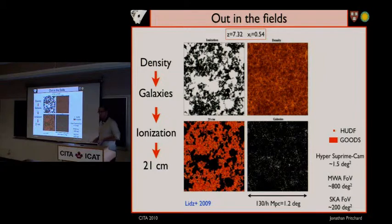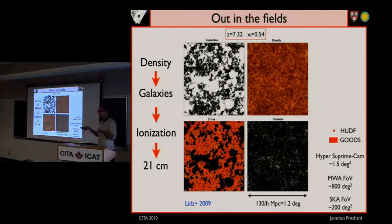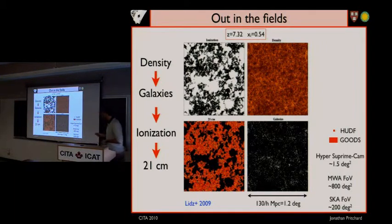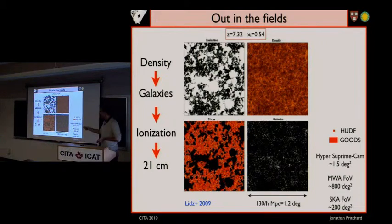Reionization is quite a complicated process. We have this theoretical picture that density fluctuations created after inflation grow over time. Galaxies form at the dense peaks of the density distribution. As those galaxies produce photons, they ionize regions creating large bubbles. We're hampered by the fact that the field of view of telescopes like Hubble is very small compared to the expected sizes of the ionized bubbles. So we need other observations — things like the 21-centimeter line — that give us a big-picture view to put together with the galaxies and complete the picture.